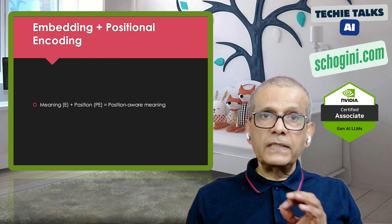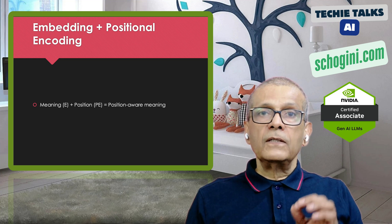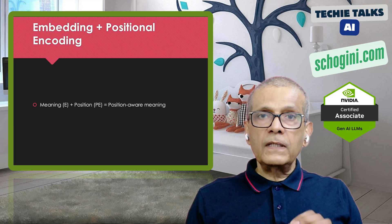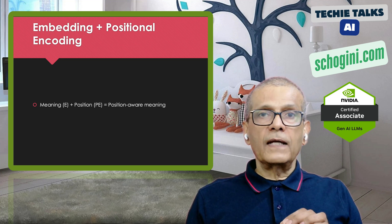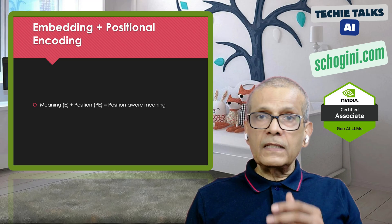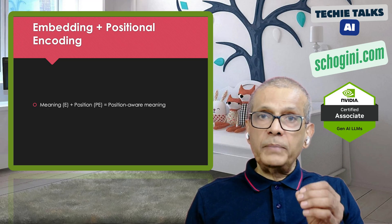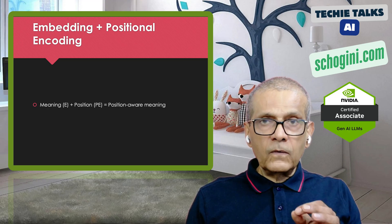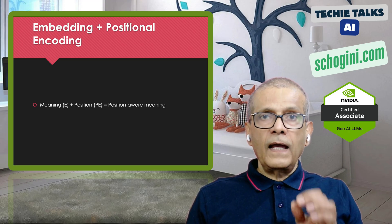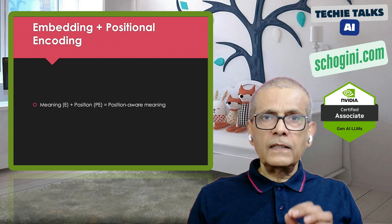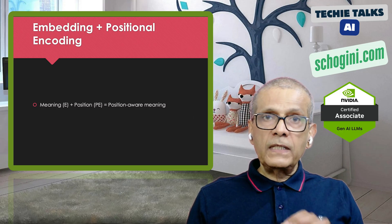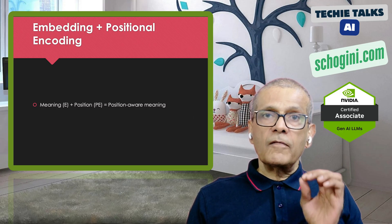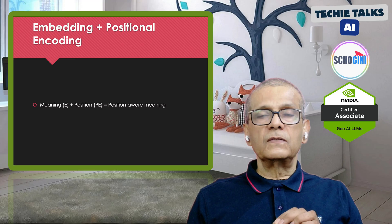We add a positional vector to the semantic embedding to give each token a location tag — just like adding GPS to pictures we take. This is the core trick: add a tiny mathematical tag to each word embedding so the model knows where it sits in the sentence.